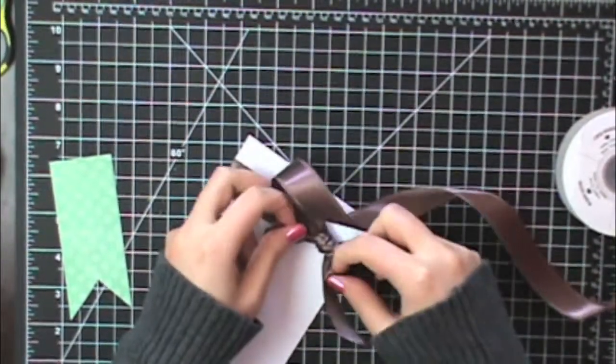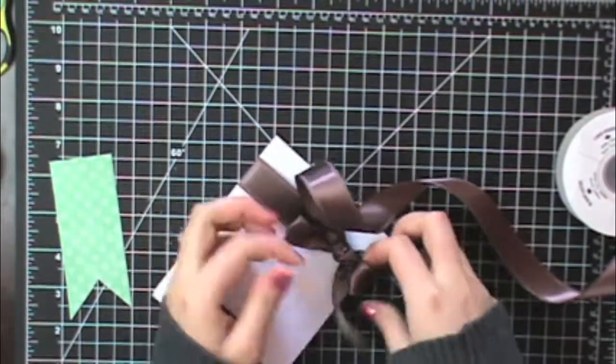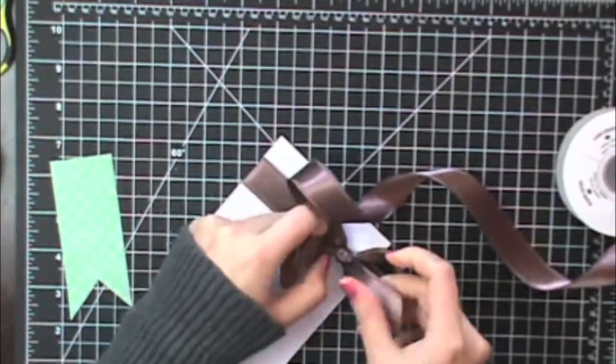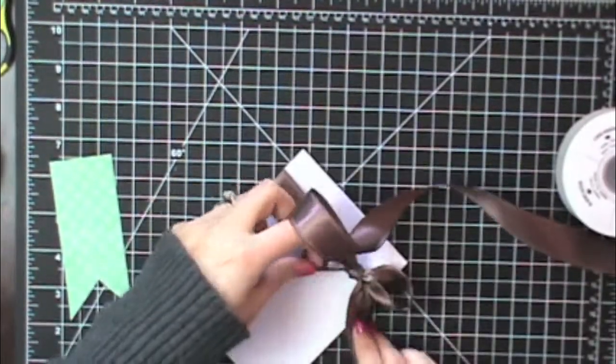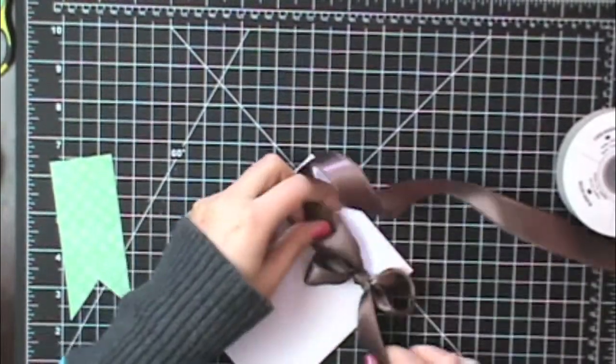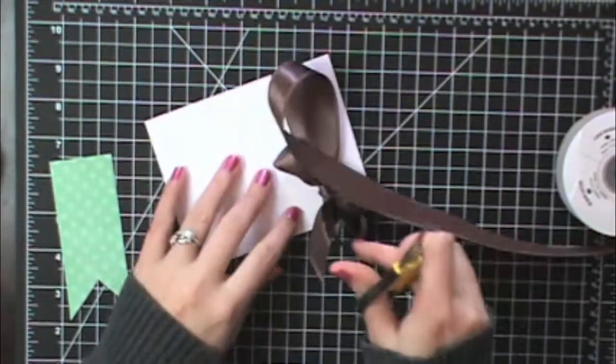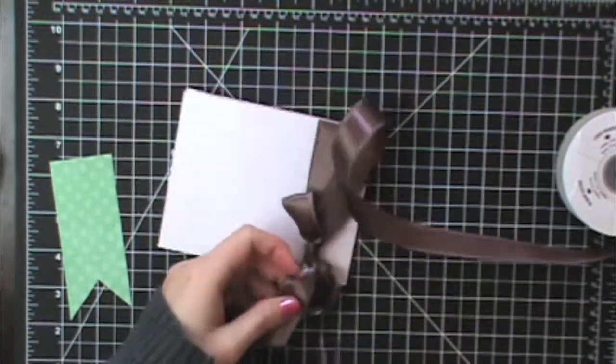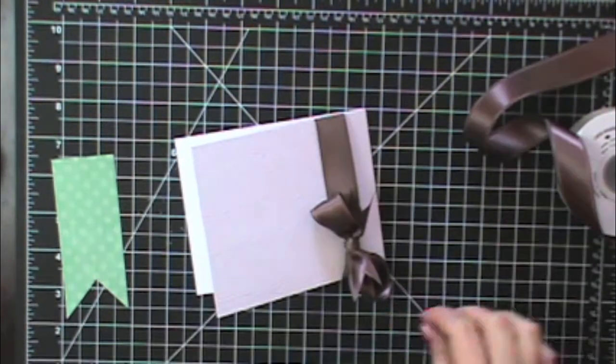I don't want the bow to be huge but I still want it to be nice and fluffy. This ribbon is nice and big. Okay that looks pretty good. It looks about like they're about even so I'm going to go ahead and cut this. I'm going to cut these at diagonals too so it's going to take me a second to get them just right. They're cut at the V shape.